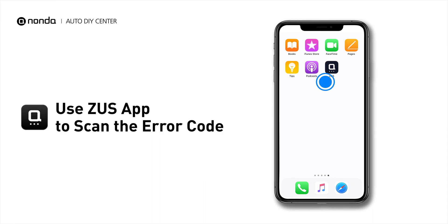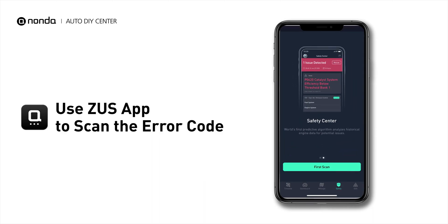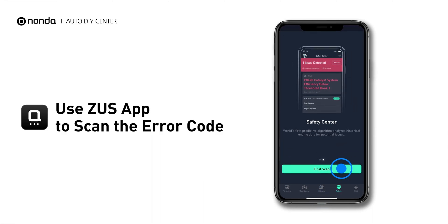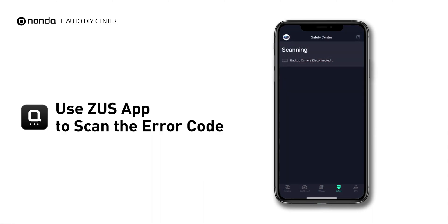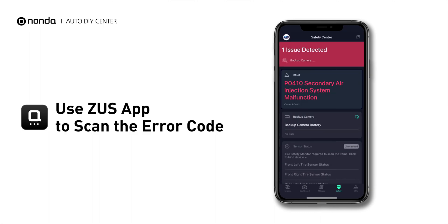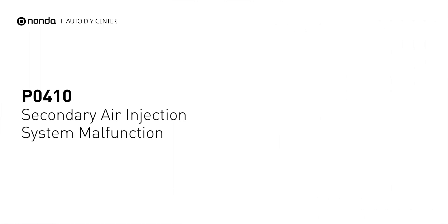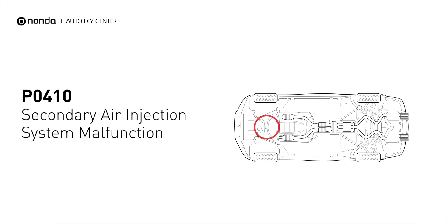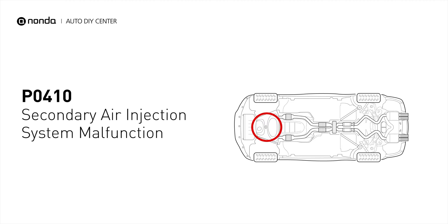Use the Zeus app to scan your vehicle and see the error code P0410. It indicates that the engine control module detected the engine oxygen sensor did not detect an increase in the oxygen level in the exhaust when the air injection system was commanded on during an active test.